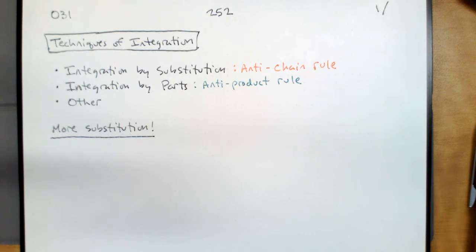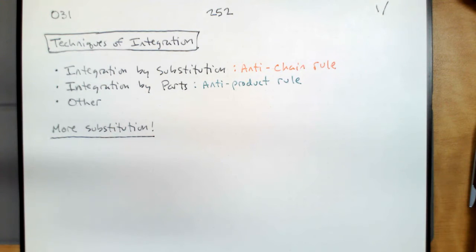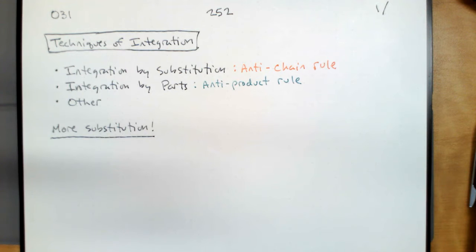Today we want to go over substitution again, to make sure that we have a method in hand and that we understand when the method is working, what it takes for the method to work, and how we can recognize when the method isn't working. It's not just that we have to look at a recipe and follow it — we have to know when we're looking at our work whether it's going to work or not.